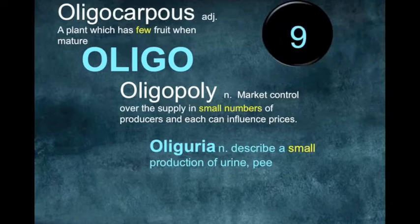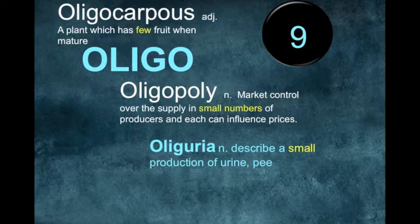Number nine: oligo. Oligopoly, oligocarpous, and oliguria all have oligo as a root, referring to few or small. Oligopoly means a market controlled by a small number of producers where each one can influence prices. Oliguria means a small production of urine. Oligocarpous means a plant which has few fruits when it matures.